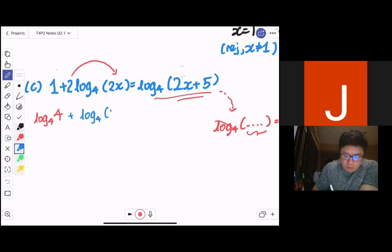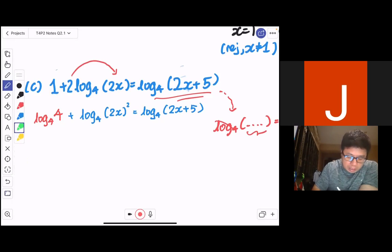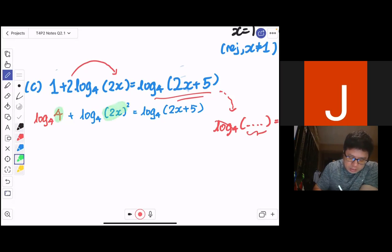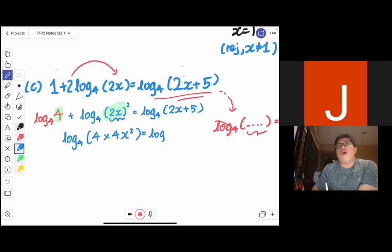So from there, what I do is, I bring up my 2. This is log₄(2x)². And on the right-hand side, it will still be log₄(2x + 5). Now combining using the product law of logarithms. Now you see I have log of one term, log of another term. This basically can give me log₄ of 4 multiplied by 4x². So 4 times 4x² equals to log₄(2x + 5).